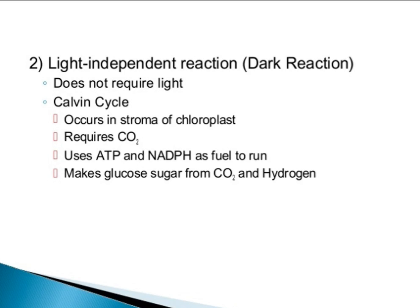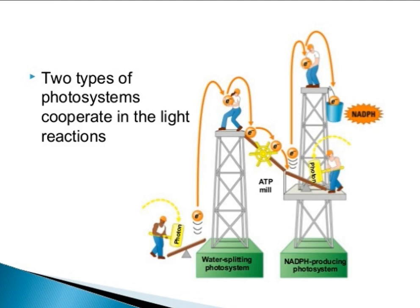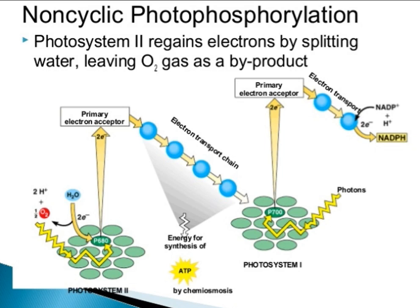The light-independent reaction, also known as the dark reaction or Calvin cycle, does not require light. It occurs in the stroma of the chloroplasts, requires CO2, and uses ATP and NADPH as fuel to make glucose sugar from CO2 and hydrogen. Cyclic photophosphorylation is associated with some photosynthetic bacteria and produces ATP from ADP and inorganic phosphate. Non-cyclic photophosphorylation splits water, releasing O2 as a byproduct, and produces NADPH and ATP.